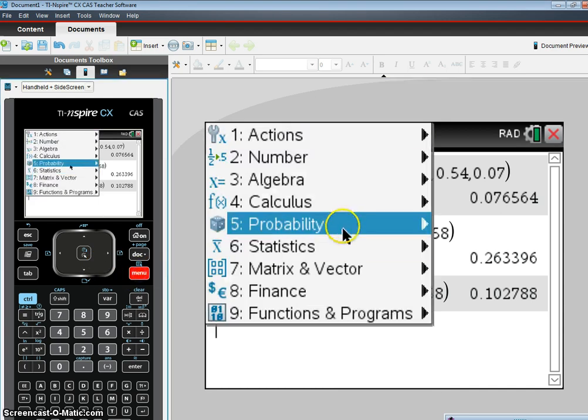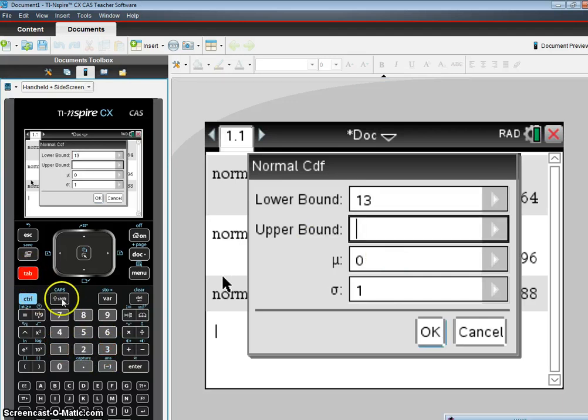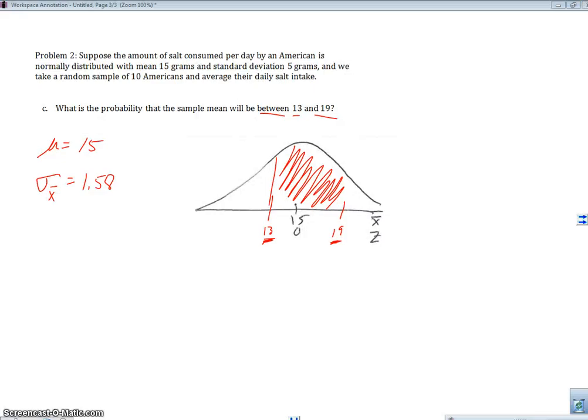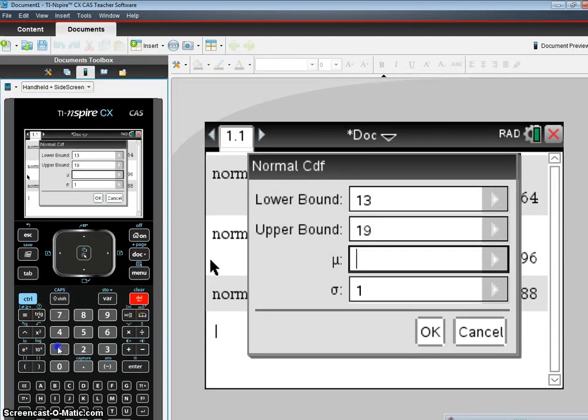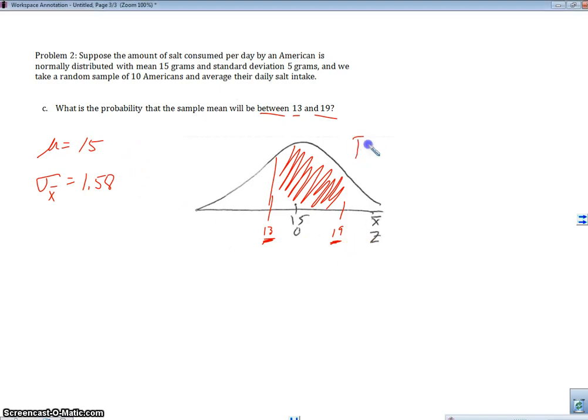So let's go ahead and do that one real quick in our calculator. Probability distributions, normal CDF. Our lower bound here is 13. Our upper bound here is 19. Let me go back and check. Yep, 13, 19. Our μ was 15, and our standard deviation was 1.58. So what did we get? 0.8915. I wrote that wrong. So 13, 19 is 0.8915, or 89.15%. So 89.15% is the probability that the sample mean will be between 13 and 19.